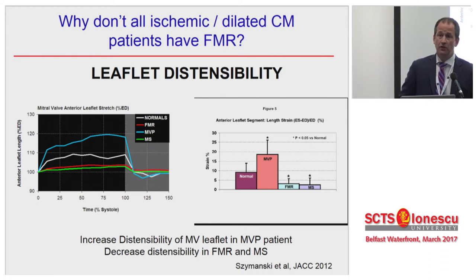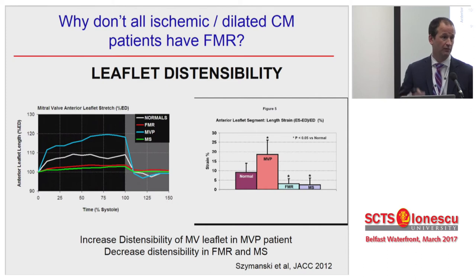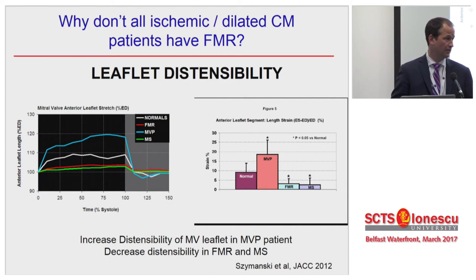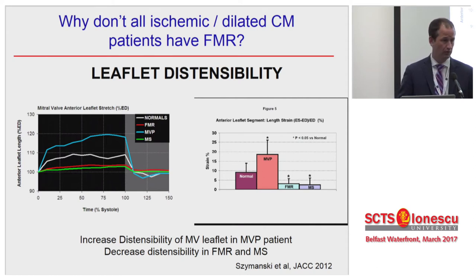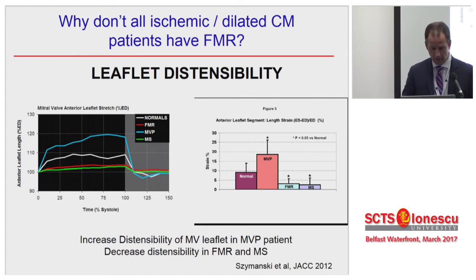These patients also have decreased leaflet distensibility. A human study with tensile testing of resected leaflets found that patients with functional mitral regurgitation had much less distensibility compared to those with normal or degenerative MR.